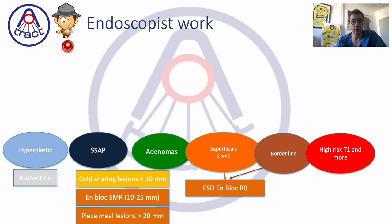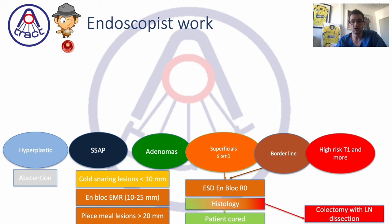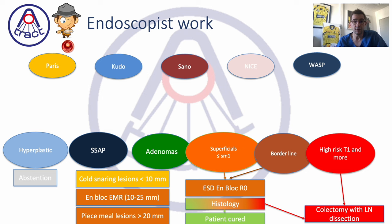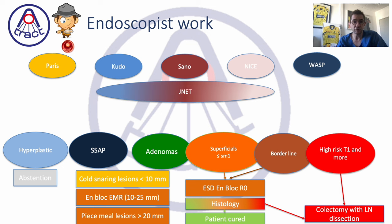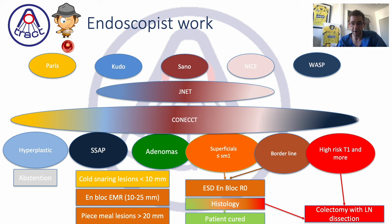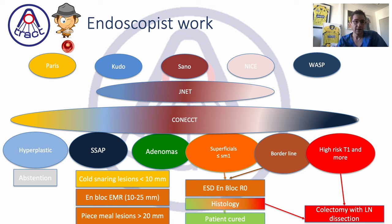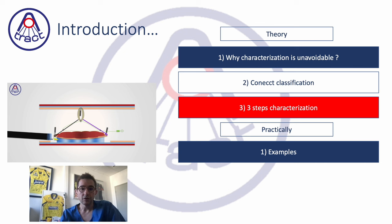Our work is to predict histology in order to choose the best treatment. Many classifications have been developed: Paris, Kudo, Sano, NICE, WASP. The GENET classification mixes Kudo, Sano, and NICE criteria but does not consider the Paris aspect. The CONNECT classification, developed about six years ago, associates all factors from Paris, Kudo, Sano, NICE, and WASP to cover all histology we can find in the colon.